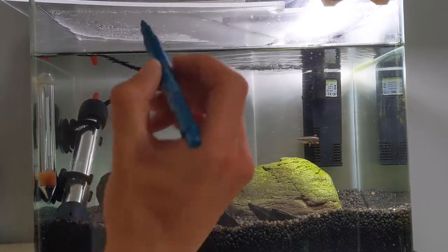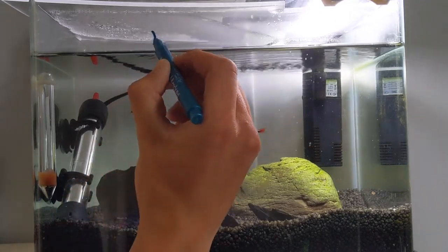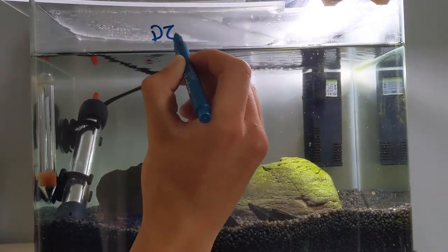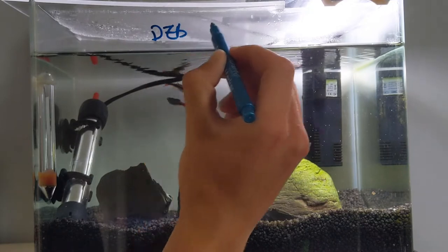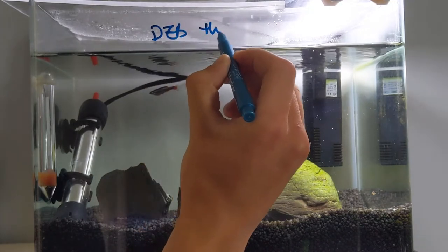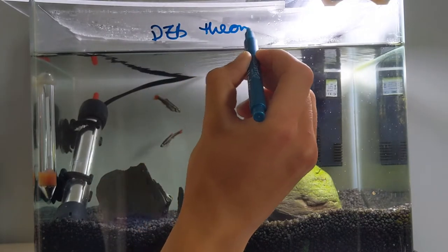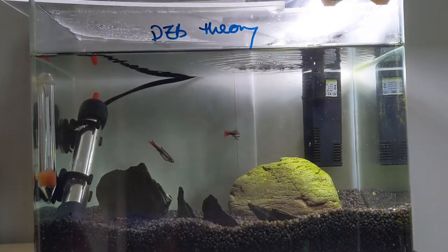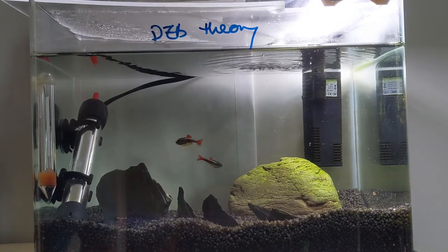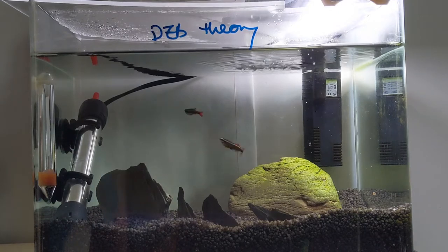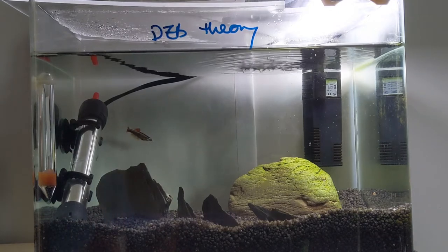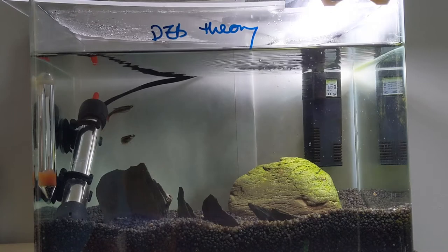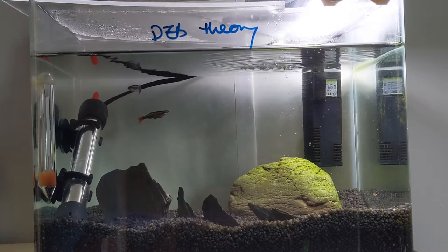Dynamic Energy Budget Theory, also known as DEB Theory. DEB Theory considers the uptake and use of energy and the consequences for an individual's physiological organisation.